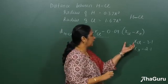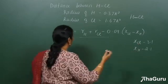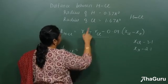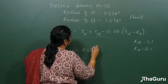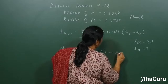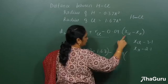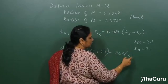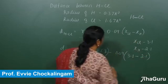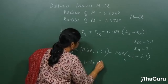The electronegativity of Cl and hydrogen — as discussed in one of the lectures — now let us substitute. The distance between H and Cl: R(H) = 0.37 plus R(Cl) = 1.67, minus 0.09 multiplied by the electronegativity of Cl (3.1, or sometimes taken as 3) minus electronegativity of H (2.1). Substituting all the values, we get the bond distance as 1.96 Angstrom.